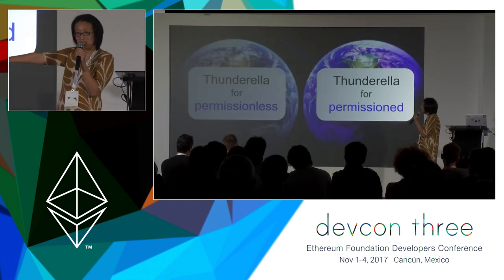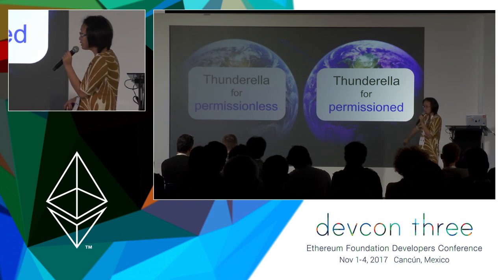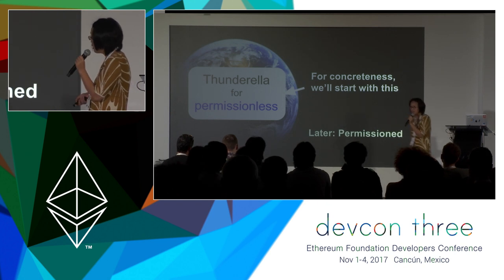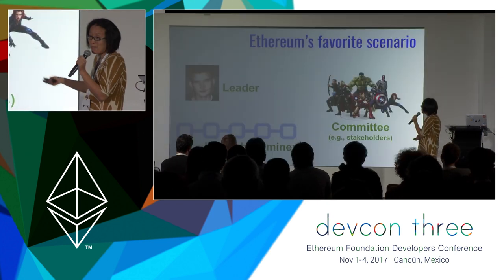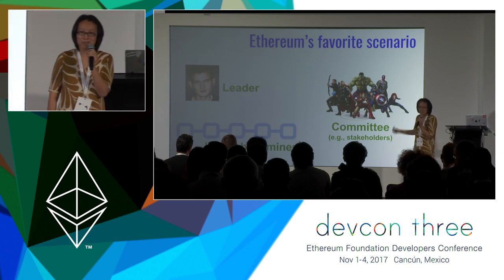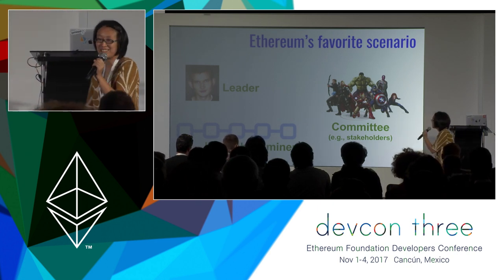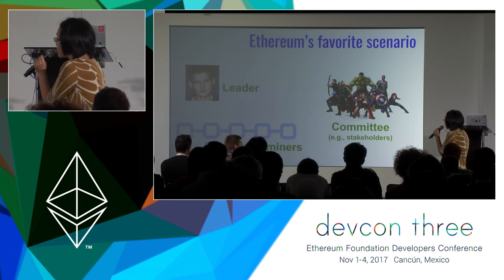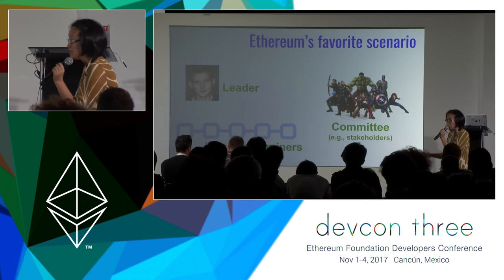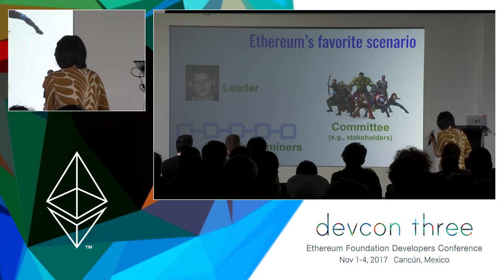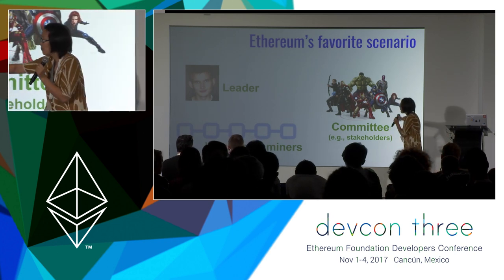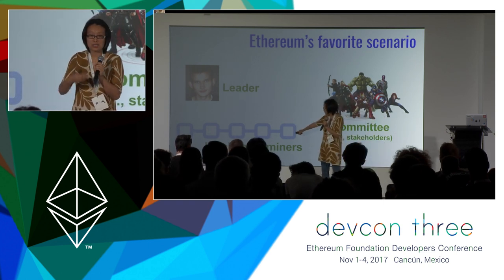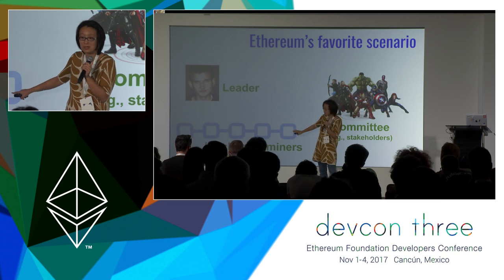Thunderella can be instantiated for both permissioned and permissionless settings. For concreteness I'll assume the permissionless setting. More concretely, let's imagine Ethereum: Ethereum wants to move towards proof of stake, and as a first step the goal is to have stakeholders form a committee and vote on top of a blockchain — currently proof of work, but in the future to be replaced with a proof-of-stake blockchain.